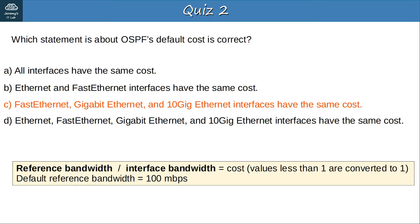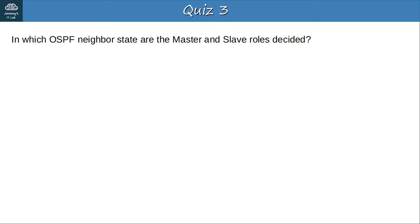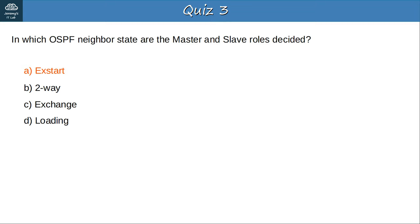Question 3: In which OSPF neighbor state are the master and slave roles decided? The answer is A, Xstart. A master and slave need to be decided in the Xstart state. The master is the router that will start the database description (DBD) exchange in the following Exchange state. In the Two-Way state a designated router and backup designated router are selected in some cases, but not a master and slave. In the Loading state, LSRs, LSUs, and LSAcks are exchanged, but master and slave are not decided.